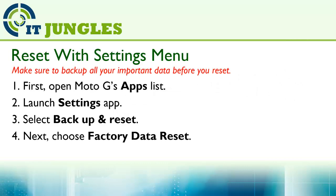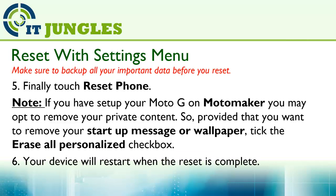You can reset your device using the settings menu. First, open up the Moto G's apps list. Launch the Settings app, then select Backup and Reset. Next, choose Factory Data Reset. Finally, touch on Reset Phone.